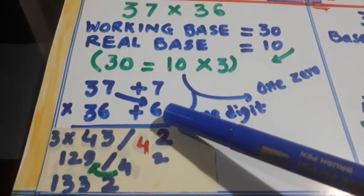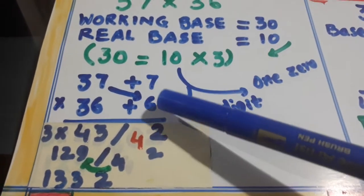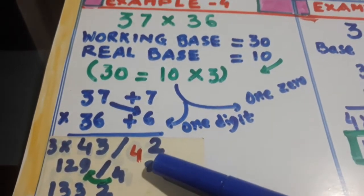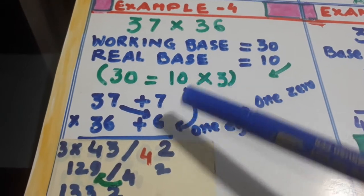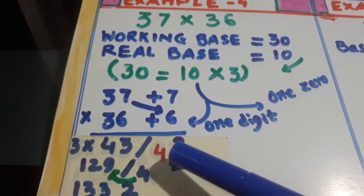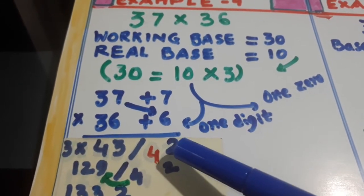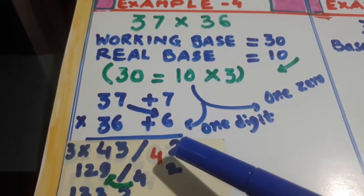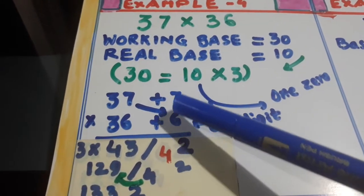36 is 6 more, 6 plus. 7, 6 is 42. And look here, there is one zero here, one zero here. So we will be taking one digit on this side. It is 7, 6 is 42, 4 will be carried.